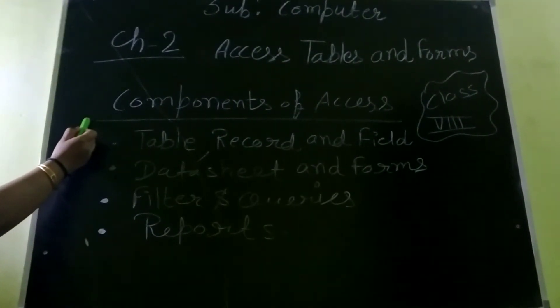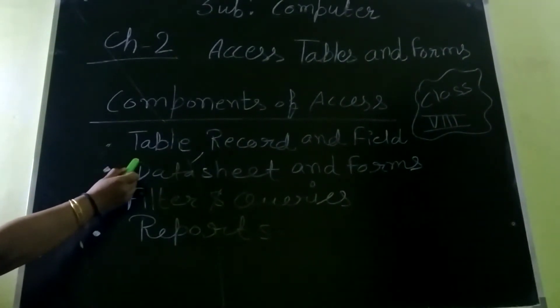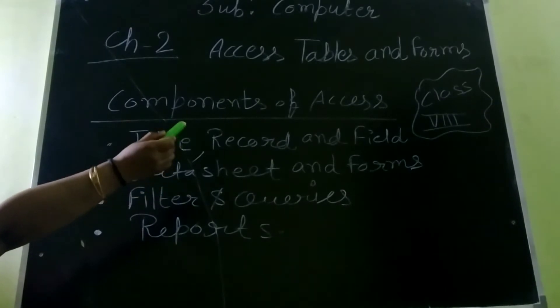Now today we will discuss the components of MS Access. First is Table, Record and Field.